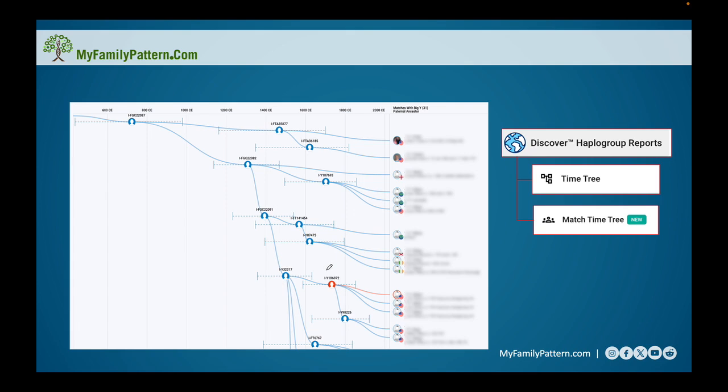If you remember in previous videos, we identified my haplogroup as I-Y106972, and it's shown here with the orange dot indicating that's my haplogroup. I have three members here and I'm the top one listed here. There's also two other members that are down here.